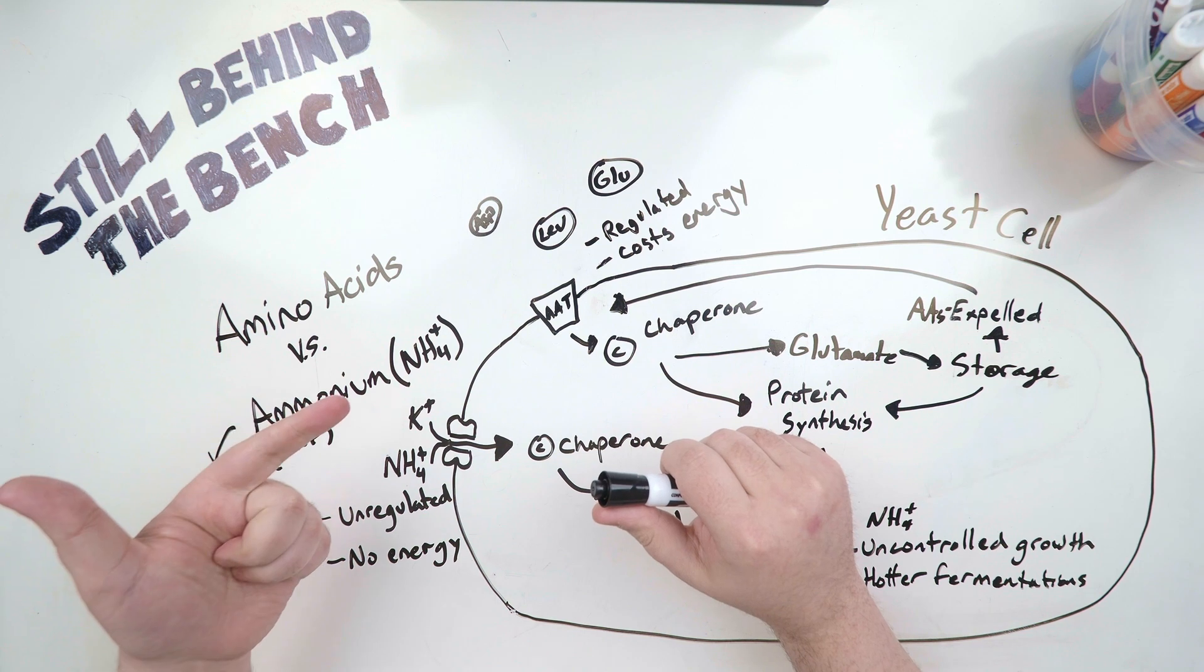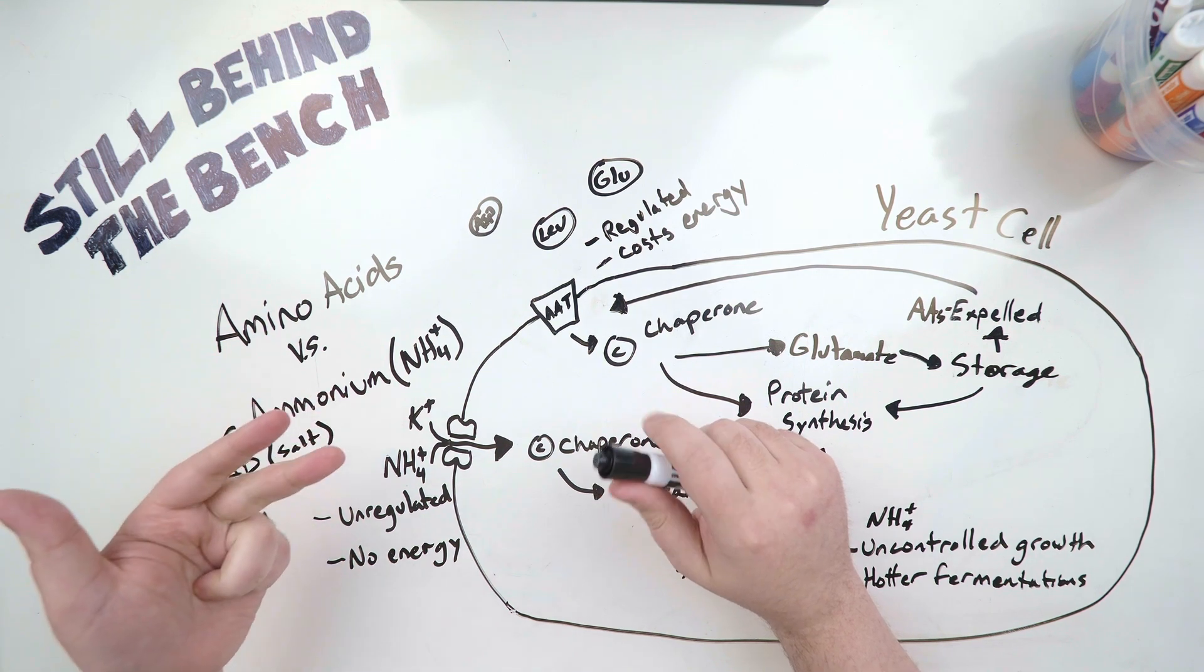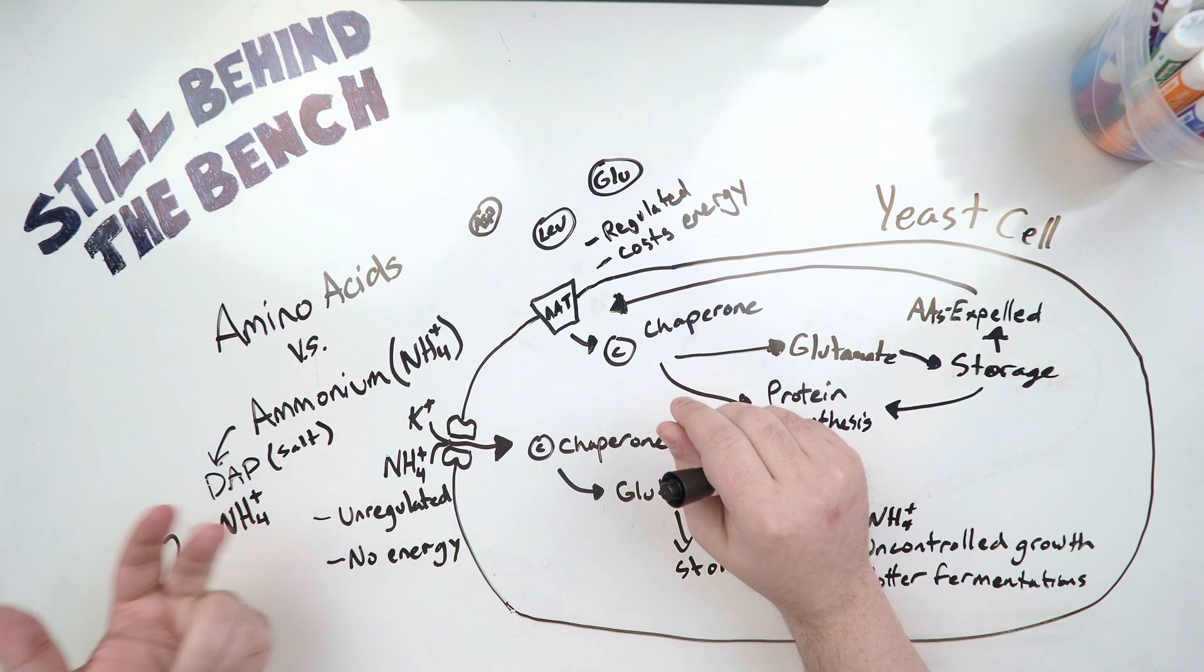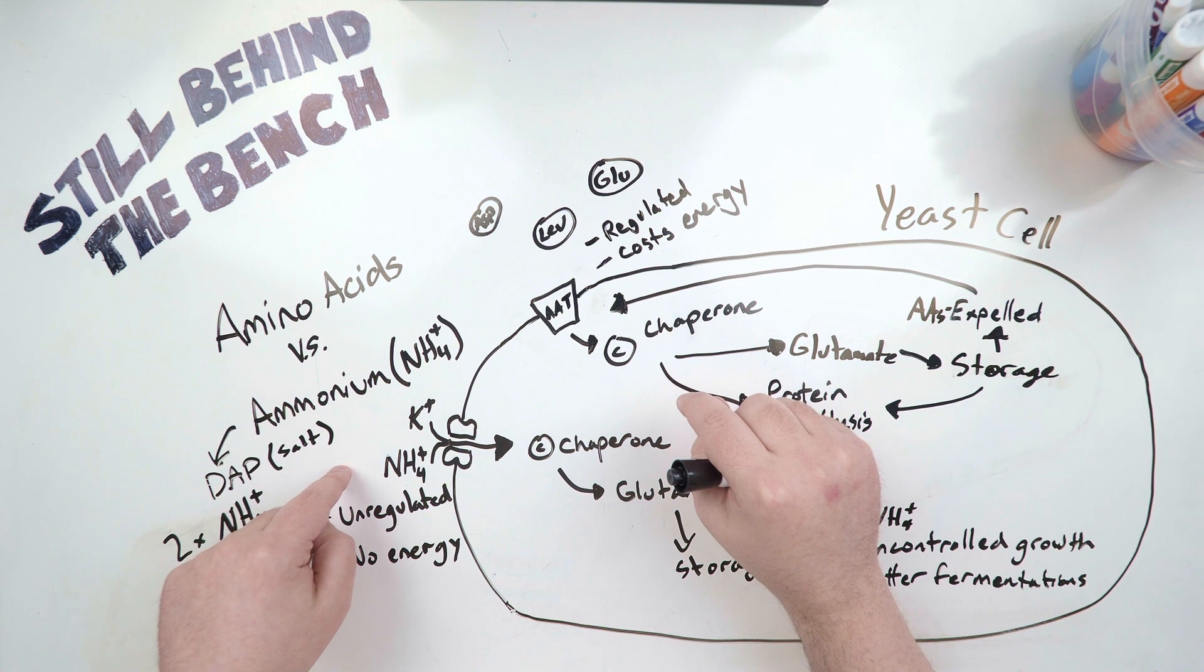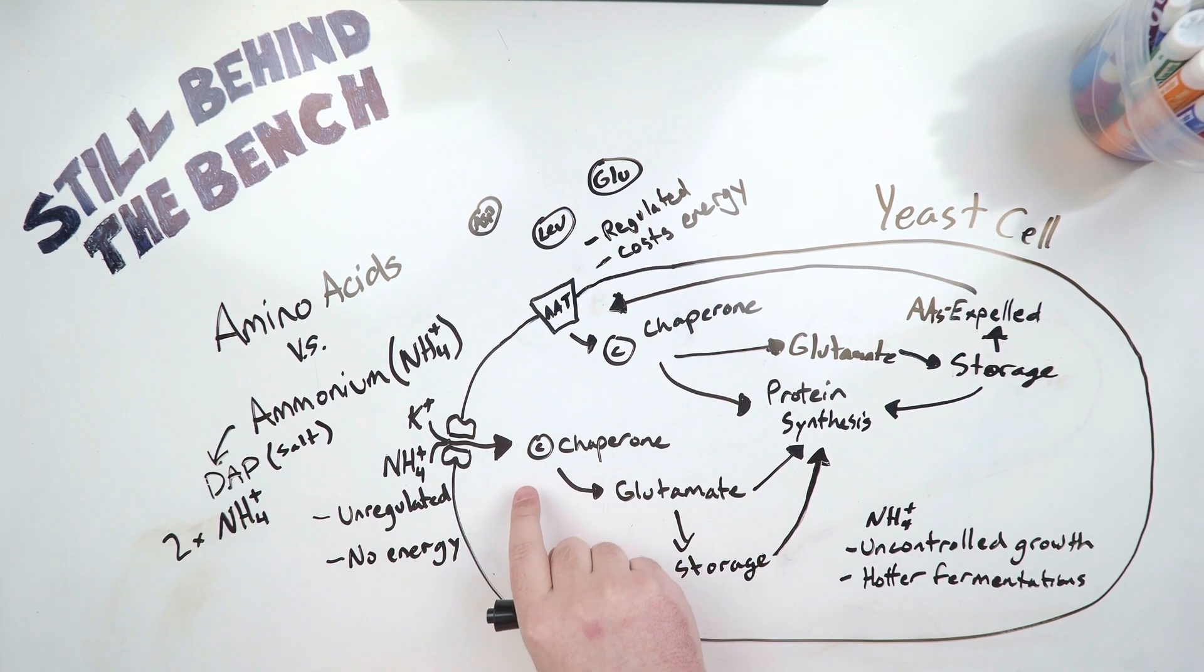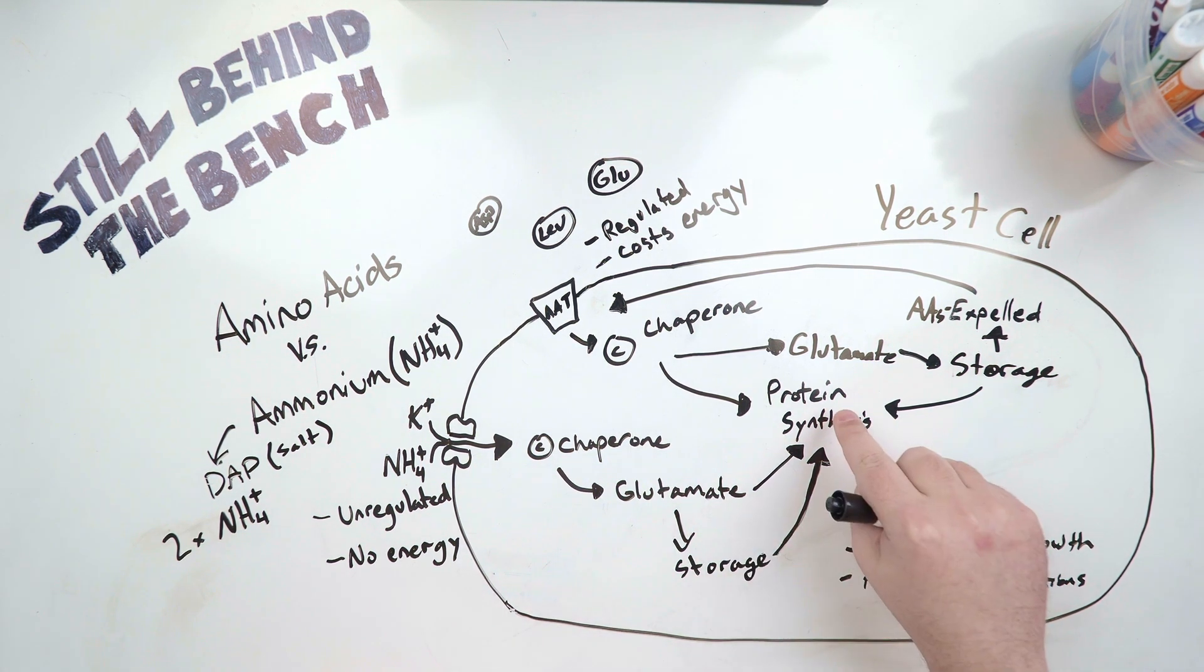unimpeded, unregulated, and it costs the cell no energy for this to happen. That ammonium will pour in until the concentration of ammonium is equal inside the cell to outside the cell. Once that ammonium is inside the cell, it'll be grabbed by a chaperone molecule. It'll be taken and turned into a glutamate amino acid. Then it can be taken to be used in protein synthesis.